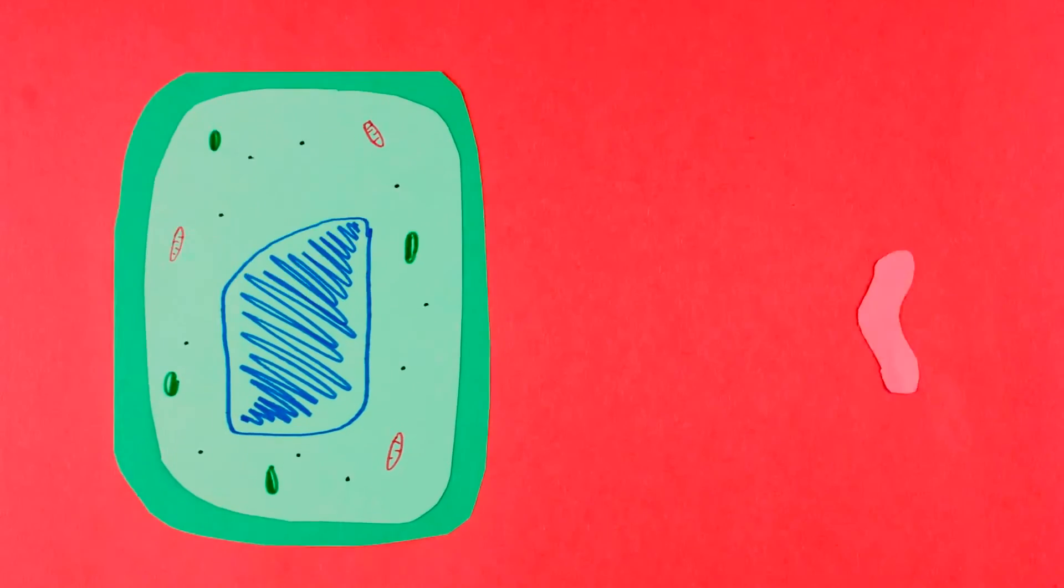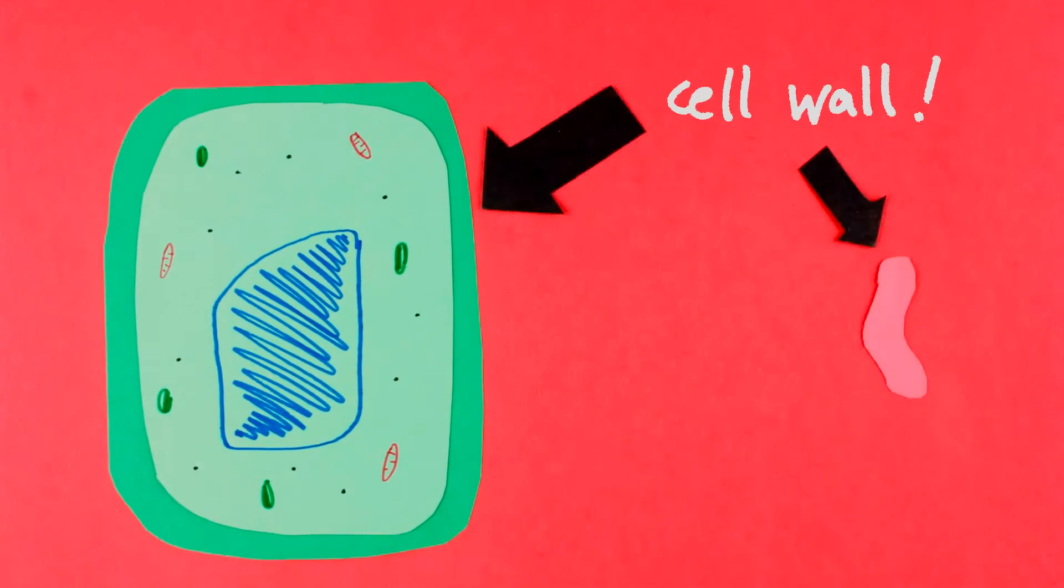Like plant cells, bacteria have cell walls to protect and support their cell membranes. These cell walls are what give the bacteria their shapes.